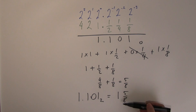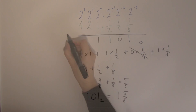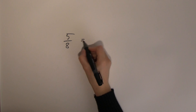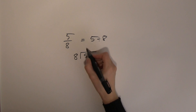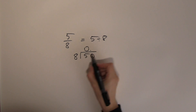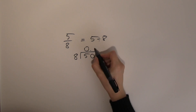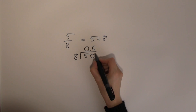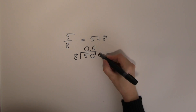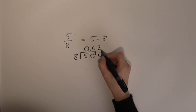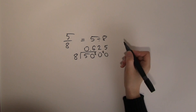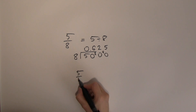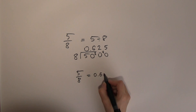To convert five eighths to a decimal fraction, divide five by eight. Eight into five doesn't go; bring in a zero and borrow: eight into fifty goes six times (six times eight is 48, remainder 2). Borrow another zero: eight into twenty goes twice (two times eight is 16, remainder 4). Bring in another zero: eight into forty goes five times. So five over eight equals 0.625.